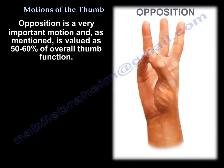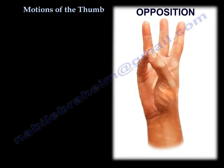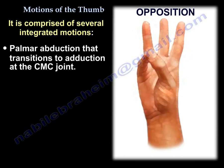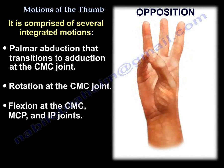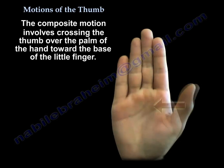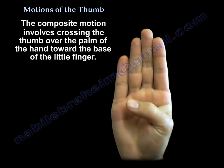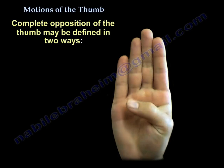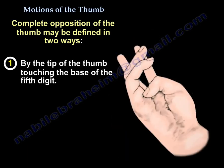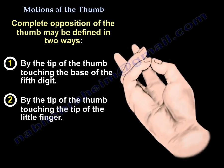Opposition is a very important motion and, as mentioned, is valued as 50-60% of overall thumb function. It is comprised of several integrated motions: palmar abduction that transitions to adduction at the carpometacarpal joint, rotation at the carpometacarpal joint, and flexion at the carpometacarpal joint, metacarpophalangeal joint, and interphalangeal joint. Composite motion involves crossing the thumb over the palm of the hand toward the base of the little finger. Complete opposition of the thumb may be defined by the tip of the thumb touching the base of the fifth digit, or by the tip of the thumb touching the tip of the little finger.